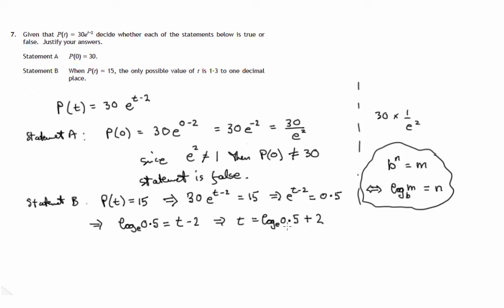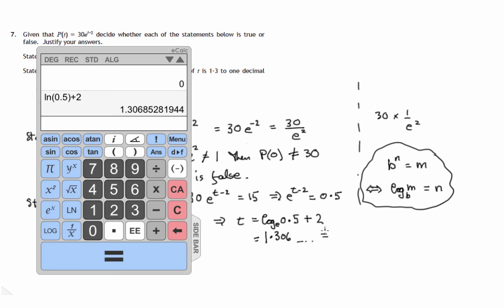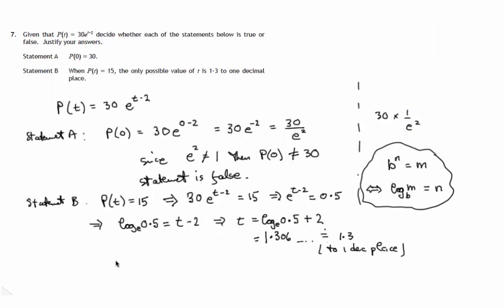There's only one value for this, but is it 1.3 to one decimal place? We need to use the calculator. The ln button — log to the base e — gives us ln(0.5) plus 2, which comes to approximately 1.306, which is approximately 1.3 to one decimal place. So that statement is true.